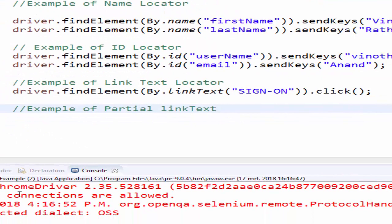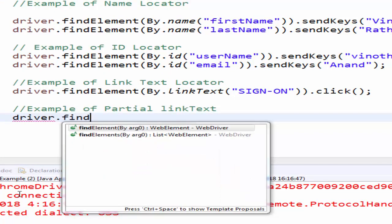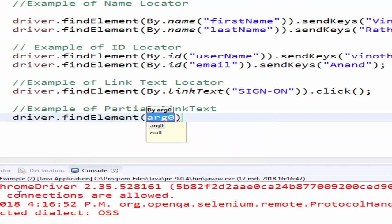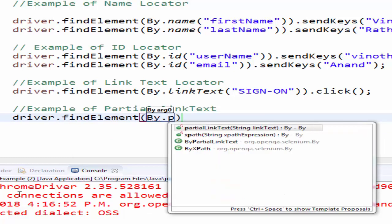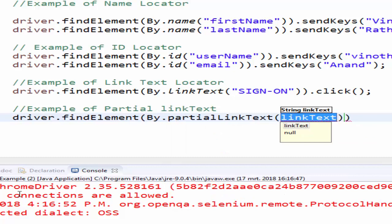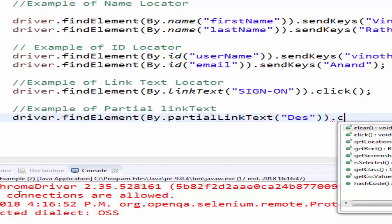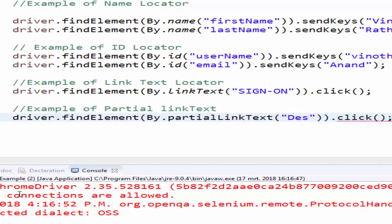Same way driver.findElement by.partialLinkText. Inside this, des. This is the value dot click. Let us see the execution.